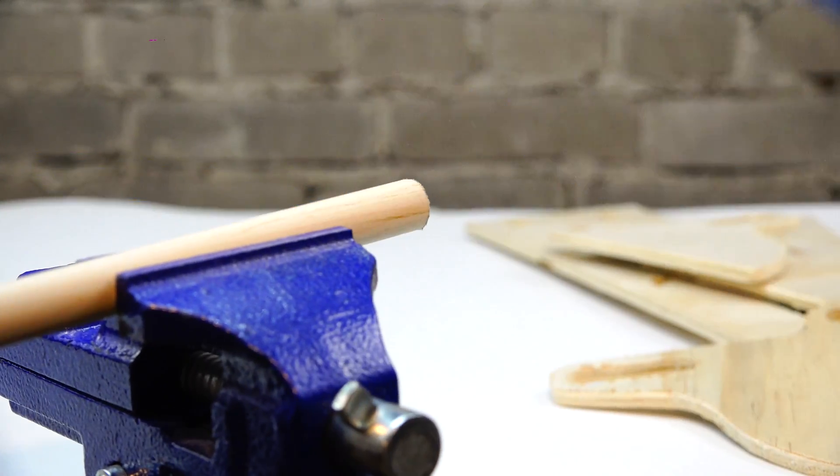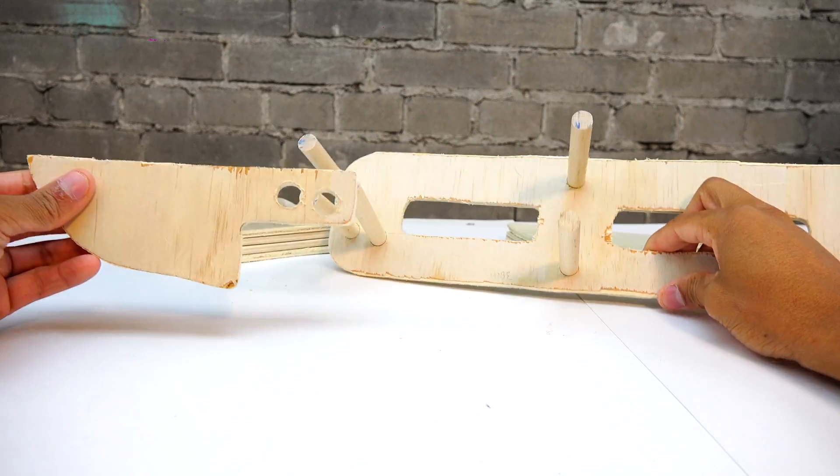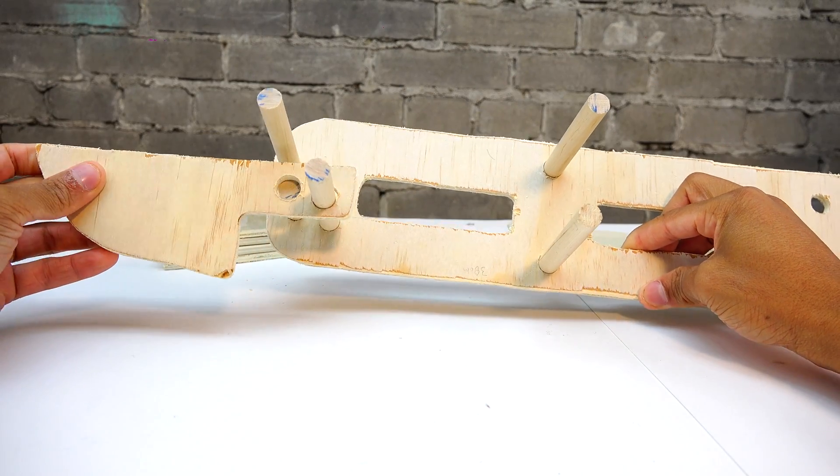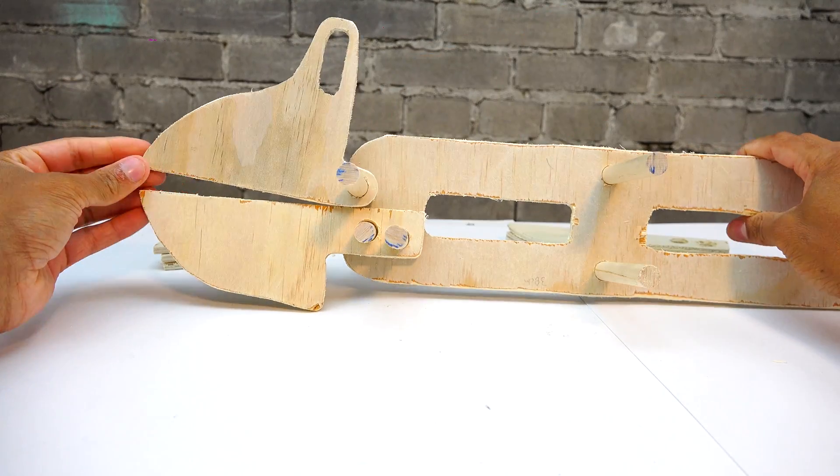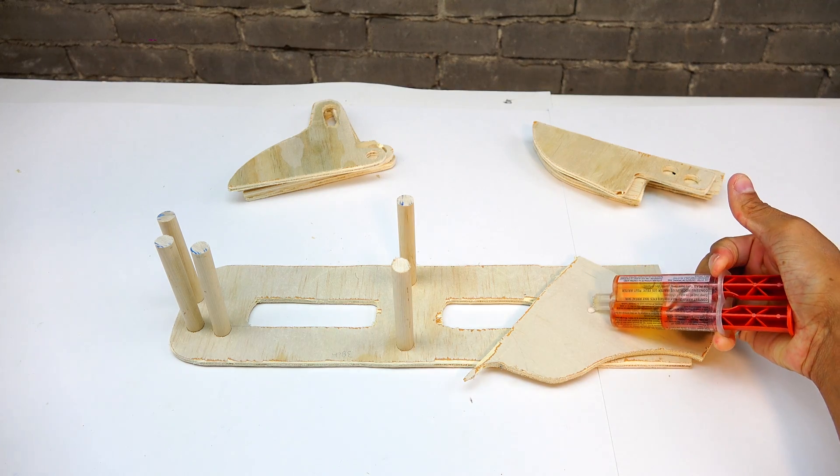Now we can cut the dowel up into pieces and get all our pieces of dowel and start to dry fit our components to see how it's going to fit together. As you can see that rotates very nicely.